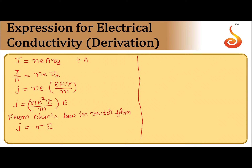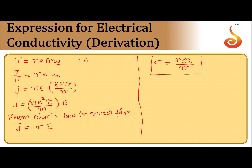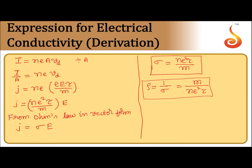Comparing these two expressions, we can conclude that sigma equals ne²τ divided by m. This is the expression for electrical conductivity of a metallic conductor. Since electrical conductivity sigma equals 1 divided by resistivity rho, resistivity rho equals m divided by ne²τ. So electrical conductivity depends on the number density of free electrons and the relaxation time τ, while e and m are universal constants.